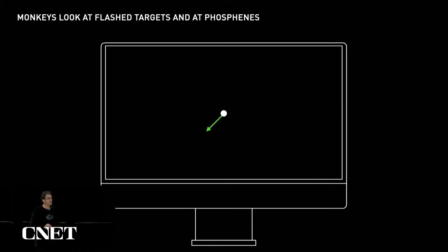Here, we flash a white dot, and the monkey makes an eye movement towards it, symbolized by the green arrow. We then choose another random location, and reward the monkey for making an eye movement towards it. Once he's got good at this task, we can begin to interleave these real stimuli with electrical stimulation of electrodes, and produce a phosphene.